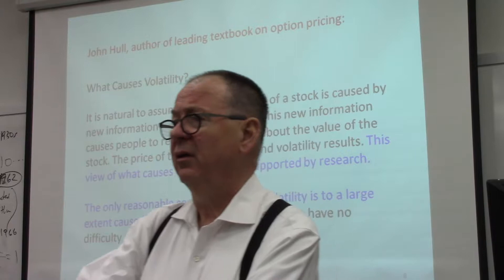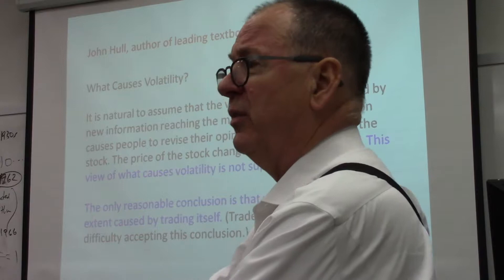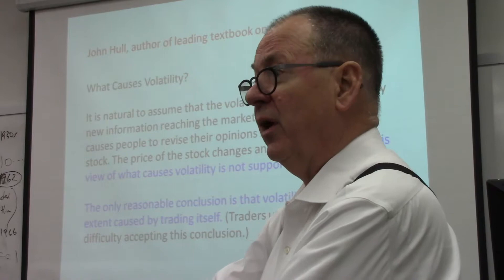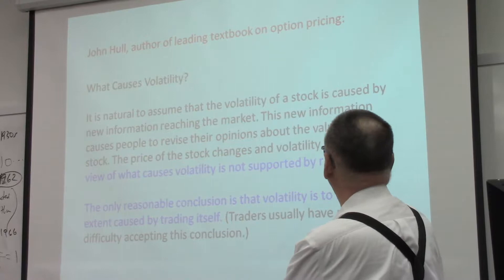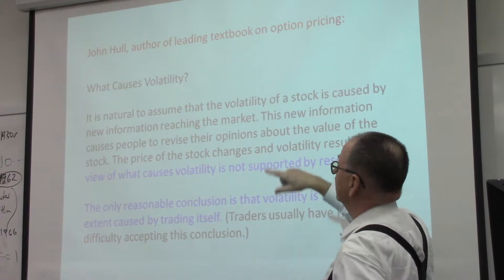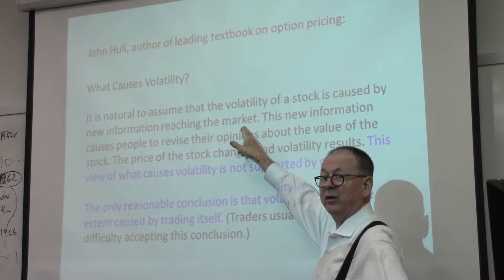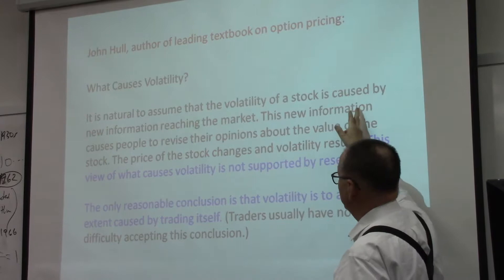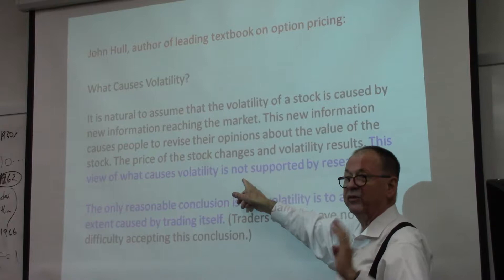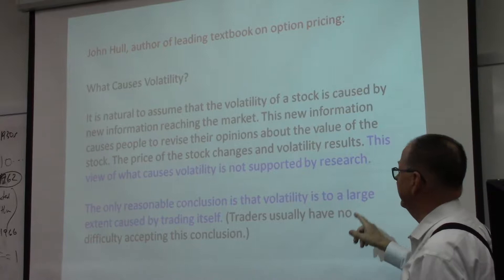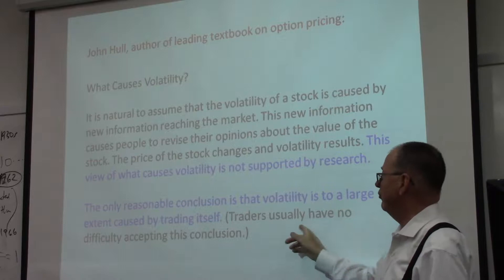Rather than using my own words, let me quote John Hull, the leading textbook author on option pricing. He says: 'It is natural to assume the volatility of the stock is caused by new information coming to the market.' He says this new information causes people to revise their opinions, the price changes, and volatility results. 'This view of what causes volatility is not supported by research. The only reasonable conclusion from the actual research is that volatility is to a large extent caused by trading itself. And traders usually have no difficulty accepting this conclusion.'